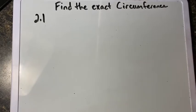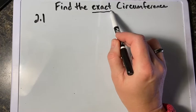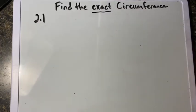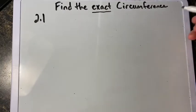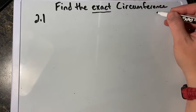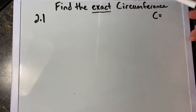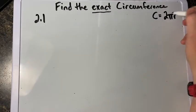Looking at our homework problems, we need to pay attention to the directions. When they say find an exact circumference, they do not want you to replace π with any number, because the numerical value for π extends on and on forever — there is no exact number. Therefore, when finding an exact circumference, we want to leave it with π in place.